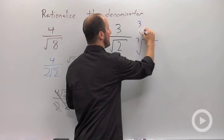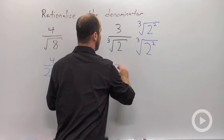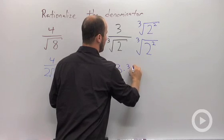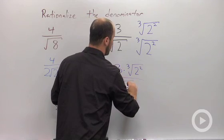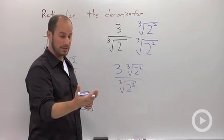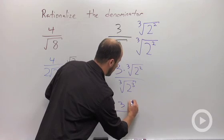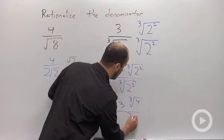Multiplying the top and the bottom by the same thing, the cube root of 2 squared. We now have 3 times the cube root of 2 squared over the cube root of 2 to the 3rd. The cube root of 2 to the 3rd is just 2. So we end up with 3 times the cube root of 4 over 2.